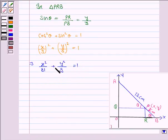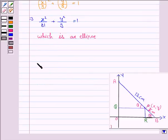This is the locus of the point P and we see that it is an ellipse. Hence the point P traces an ellipse. The locus of the point P is an ellipse given by x square upon 81 plus y square upon 9 is equal to 1.